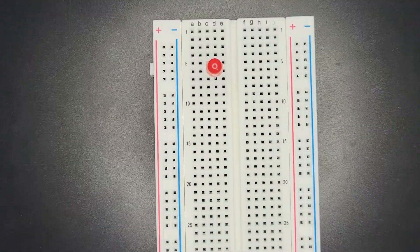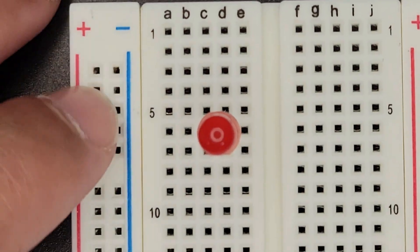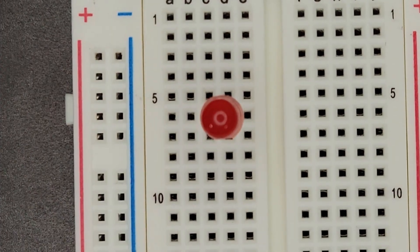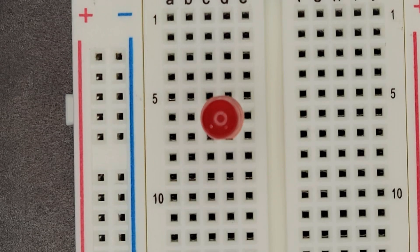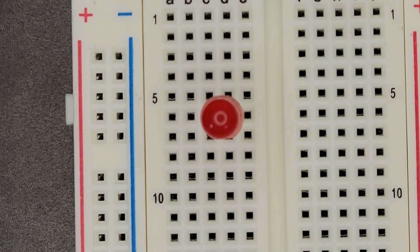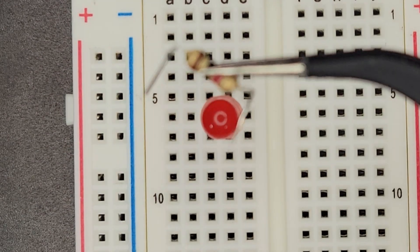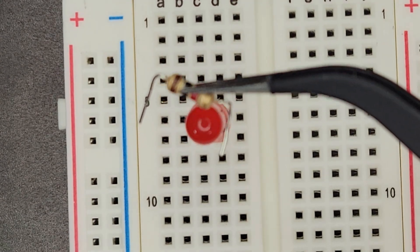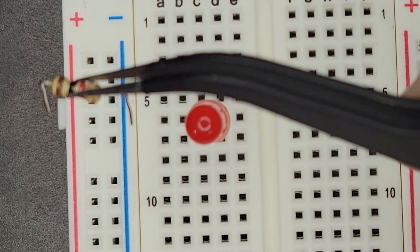However, one thing we need to be careful of is when we plug in raw power to an LED it could burn out. So what we need to use is a resistor, which looks like this, which will just bring the power level down to a level that the LED can handle or that it's expecting.